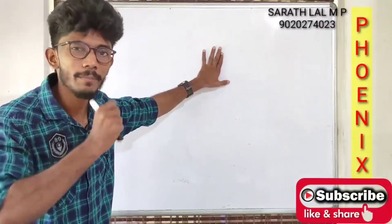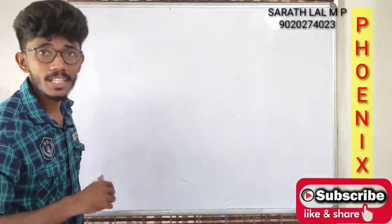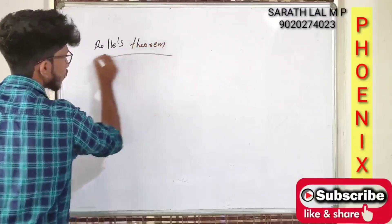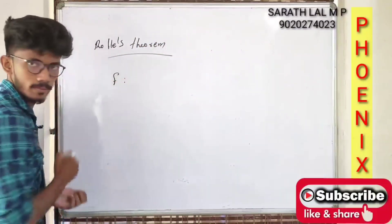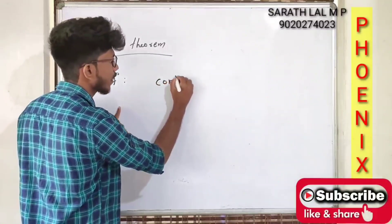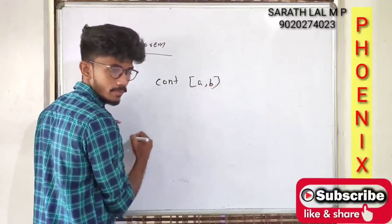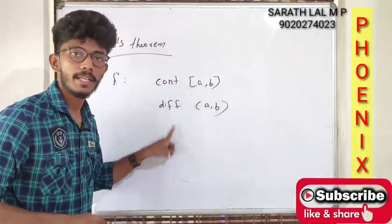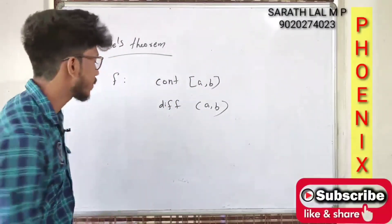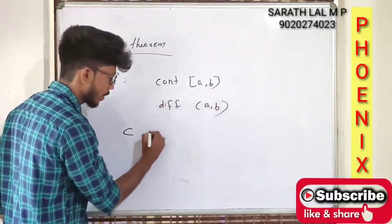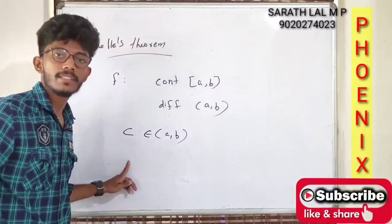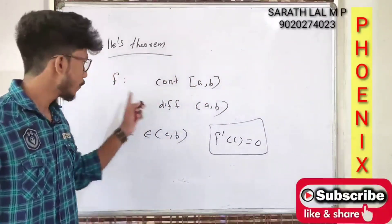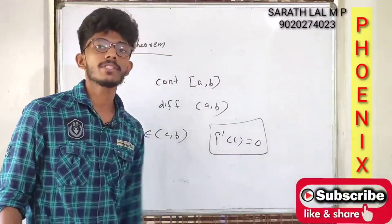Consider function f, which is continuous in closed interval [a, b] and differentiable in open interval (a, b). Then there exists a point c in between a and b where f'(c) is equal to 0. This function's derivative at that point c is 0. This is the rule of Rolle's theorem.